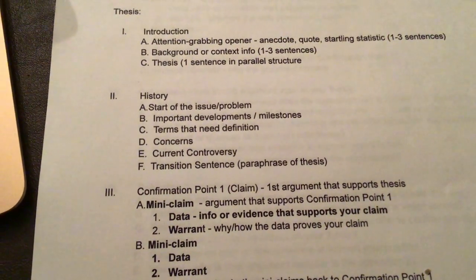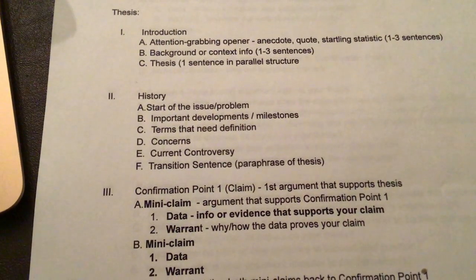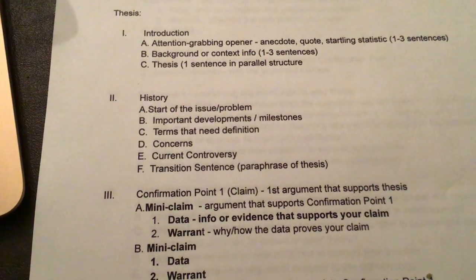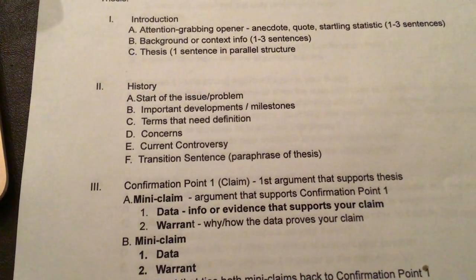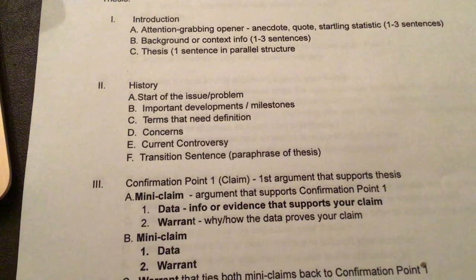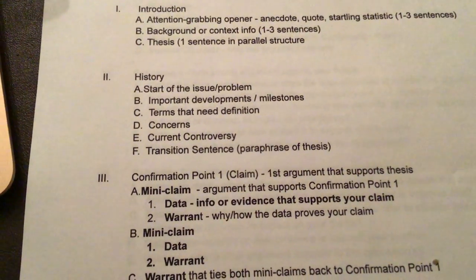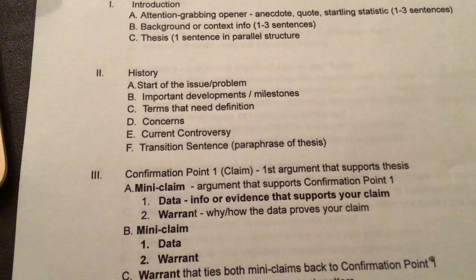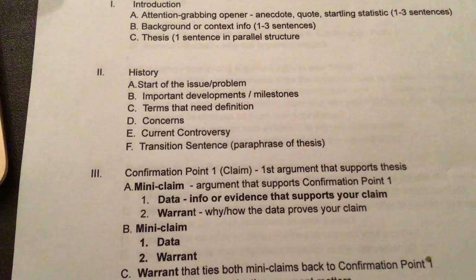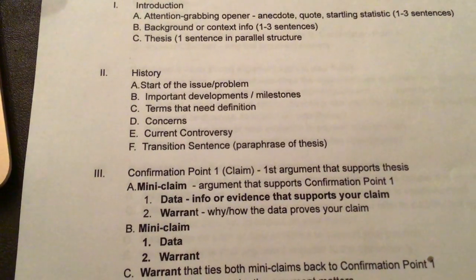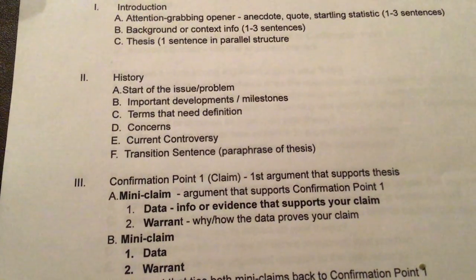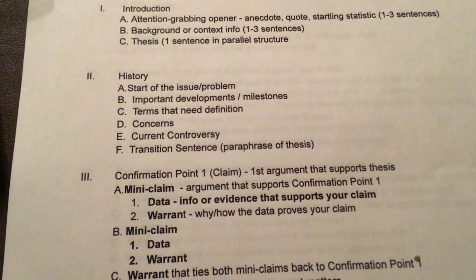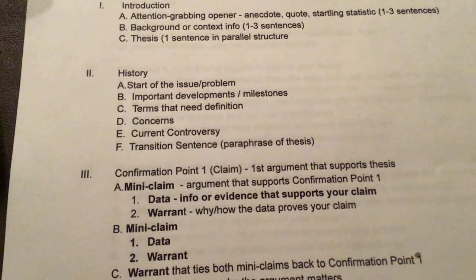For example, if my current controversy sentence was about the border wall debate, my transition sentence might be: 'However, there are many reasons why the United States should build a border wall.' That's your history. Those are sample items you can include — you don't need all of them. When you start writing, your history section is going to be about a half page to maybe three-quarters of a page. If you have problems knowing what to include in history, talk to me.